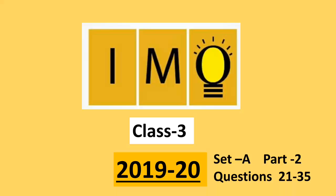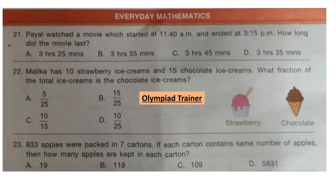Welcome to our channel Olympiad Trainer. Here I am with the question paper of IMO, i.e. International Mathematics Olympiad exam for class 3, year 2019-20, Set A. In this video we are going to solve questions 21 to 35. For questions 1 to 20, please watch part 1 video. Link is given in the description box. New users, please subscribe our channel Olympiad Trainer for more such solved question papers. Let's start with the next section: Everyday Mathematics.